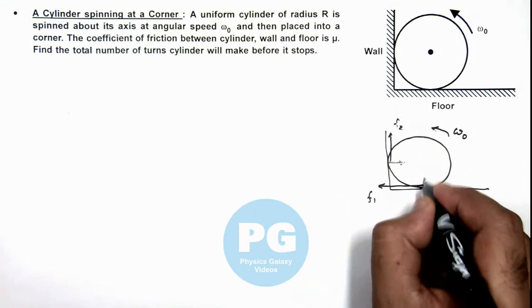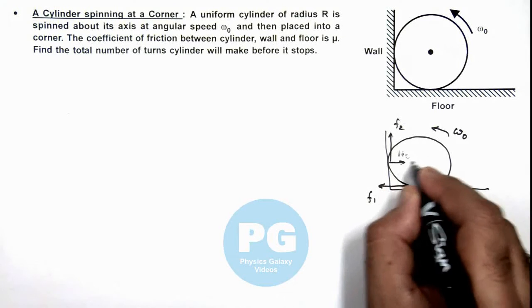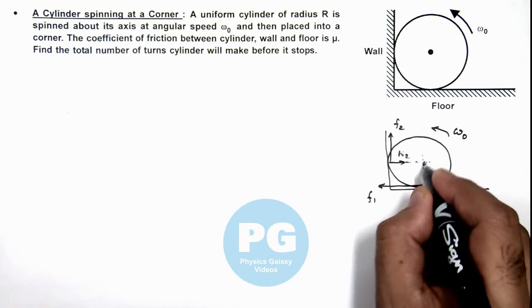And the normal reactions acting at bottom is say n1 and on wall is say n2, and these will be passing through the center.